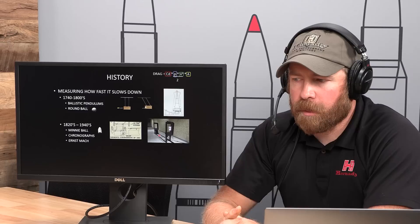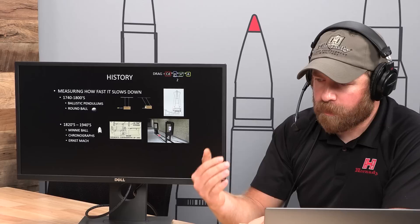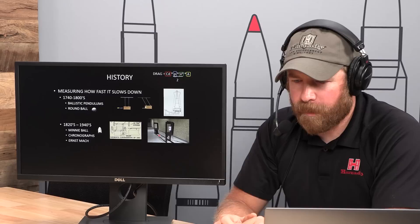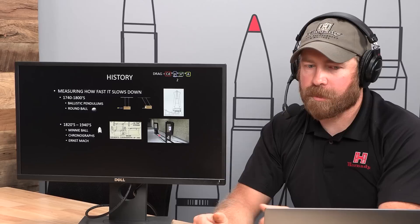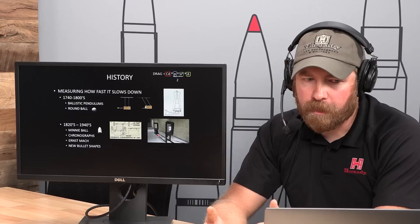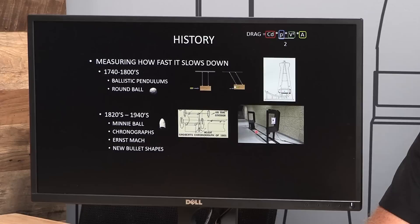Around 1880, Ernst Mach discovered — using shadowgraph technology (imaging heat flow from a candle against a wall) — that he could observe shockwaves on bullets traveling faster than the speed of sound. His name is tied to something we'll concentrate on heavily in this discussion: Mach number. So post-Minié ball, with chronograph instrumentation and Mach's discoveries, experimentation began on different bullet shapes and how shape affects how fast bullets slow down.